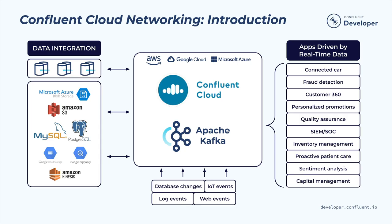Confluent Cloud runs in its own virtual network in one of three cloud providers: AWS, Google Cloud, or Azure. You have the apps running in another network, in the cloud or on-premise. You need to connect the networks to send data back and forth, bearing in mind your security, privacy, and cost requirements.